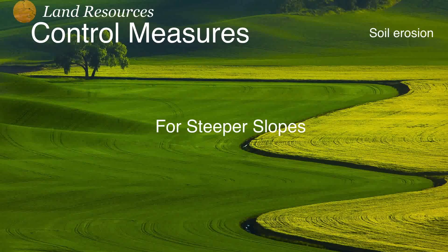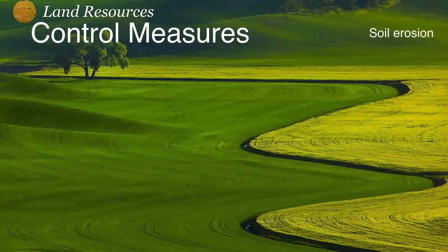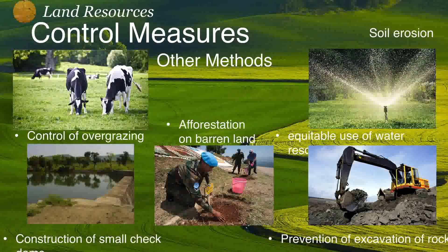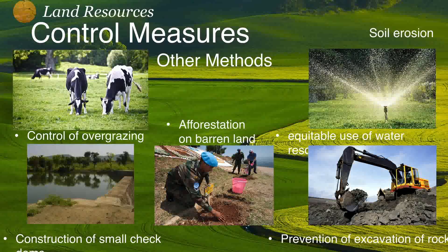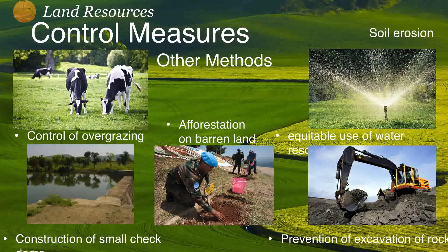For steeper slopes, we can go for terracing — cutting the land in the form of terraces to hold the soil. Other general methods to prevent soil erosion include controlling overgrazing, constructing small check dams to regulate water flow, afforestation on barren land, preventing the removal of rocks since rocks help hold the land, and ensuring equitable use of water resources by sprinkling water, as dry land is easily carried away by wind.